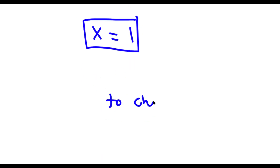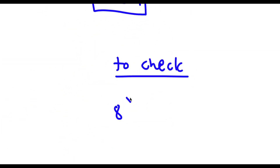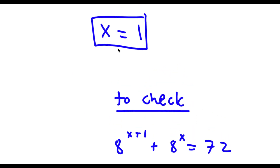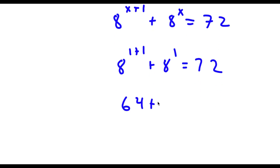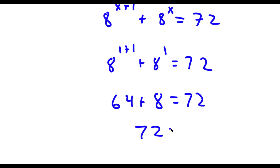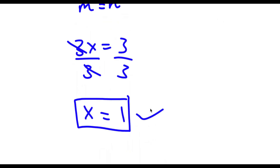To check: I have 8 to the power of x plus 1 plus 8 to the power of x is equal to 72. I know x equals 1, so 8 to the power of 1 plus 1 plus 8 to the power of 1 equals 72. That's 8 to the power of 2, which is 64, plus 8 to the power of 1, which is 8, equals 72. 64 plus 8 is 72, so 72 equals 72 — my solution is correct.